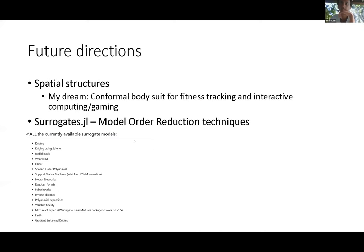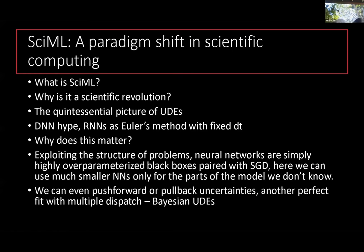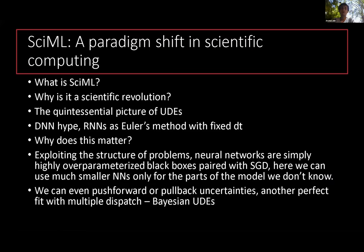Taking over to discuss SciML in more detail: the idea is we don't want to keep redoing work. What's amazing about the SciML ecosystem is that it started off with high-performance implementations of lots of solvers — up to around 300 to 400 at this point — covering biological sciences and many other areas. It fits the definition of how we do science more efficiently: how do we take other people's work and use it optimally?